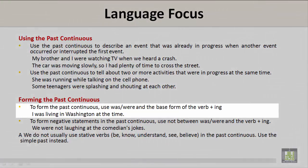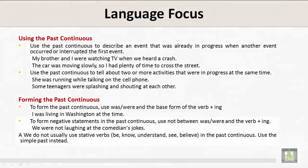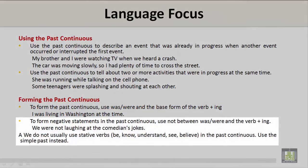To form the past continuous, use 'was' or 'were' and the base form of the verb plus -ing. For example: 'I was living in Washington at the time.' To form negative statements, use 'not' between 'was' or 'were' and the verb -ing: 'We were not laughing at the comedian's jokes.' Note: stative verbs such as understand, see, and believe are not usually used in the past continuous — use the simple past instead.